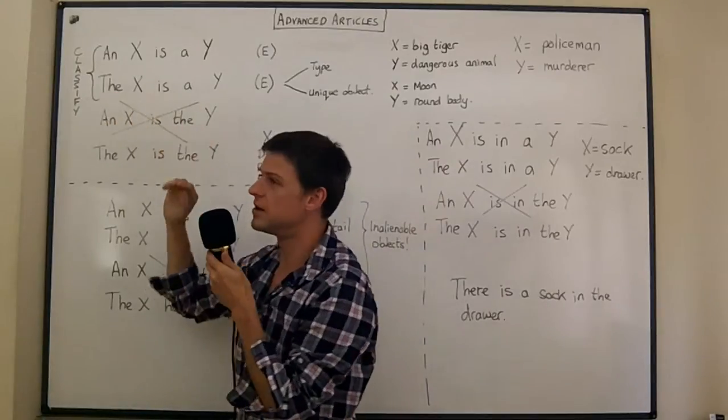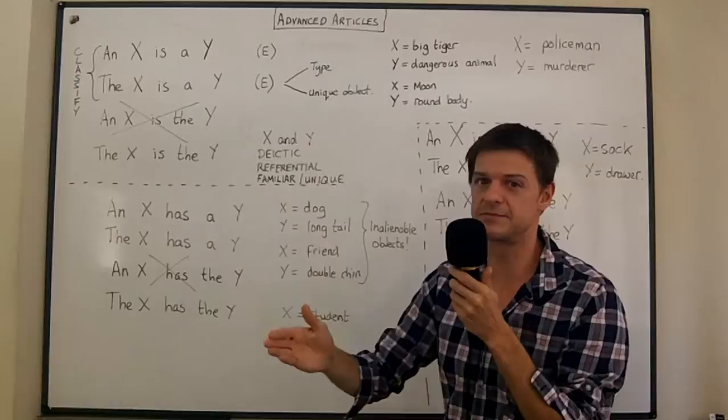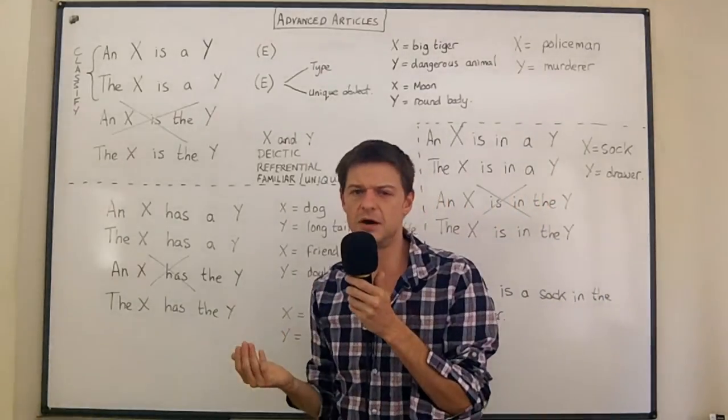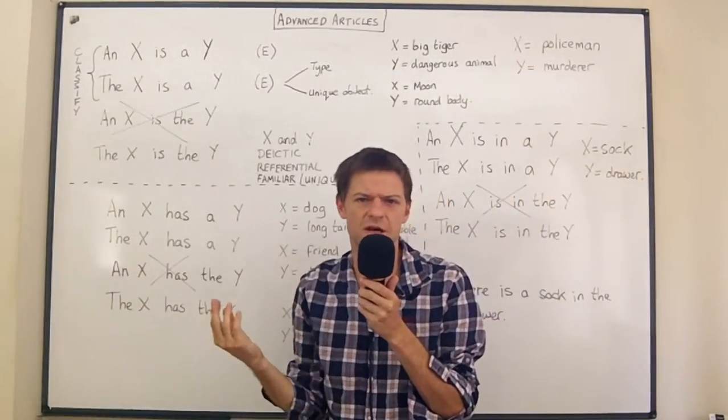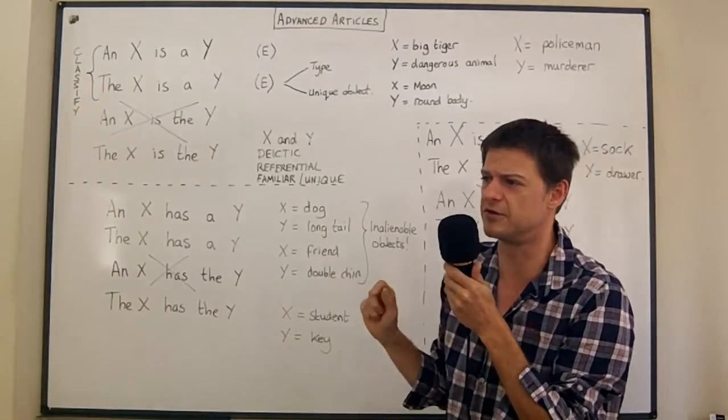The policeman is a murderer is what you would say if you know that the policeman is a bad man but you don't know exactly which murder he's guilty of. You just know maybe someone told you that he is a murderer. And so you say the policeman is a murderer.